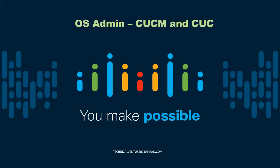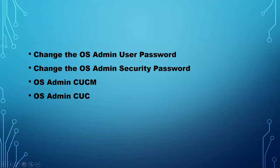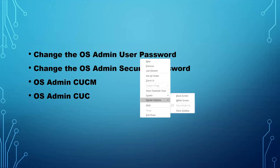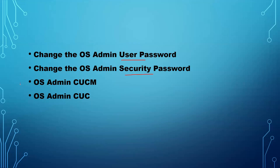Hey everyone, welcome back to my channel. Today I'm going to discuss the OS Administration page on both CUCM and Unity Connection. It's kind of the same page on both, but I'll show you side by side so you can see the differences — for example, on Call Manager you can see the cluster, while on Unity you'll have only one publisher. We'll also cover how to change the OS admin user password and the security password.